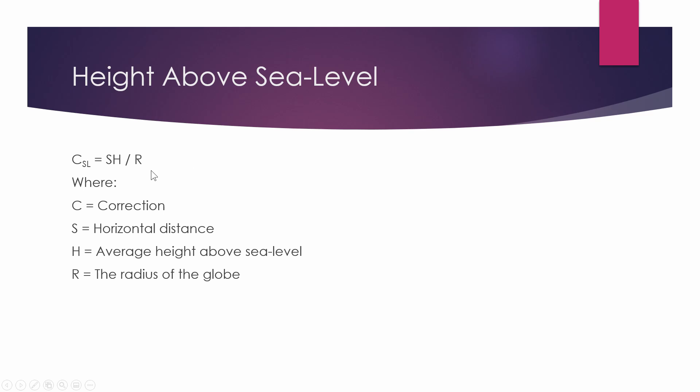Then you have your correction for height above sea level. So this is basically to counter for the curvature of the Earth. So for those who believe in the flat Earth, we literally do calculations to determine the actual distance because the Earth is actually curved. We've got our S, which is a horizontal distance, which is the same as AB and D from previous calculations. Then we have our average height above sea level for the area that you're measuring in, as well as the radius of the globe of Earth.